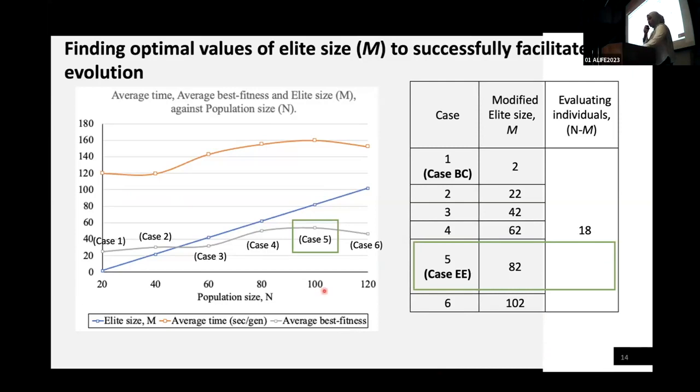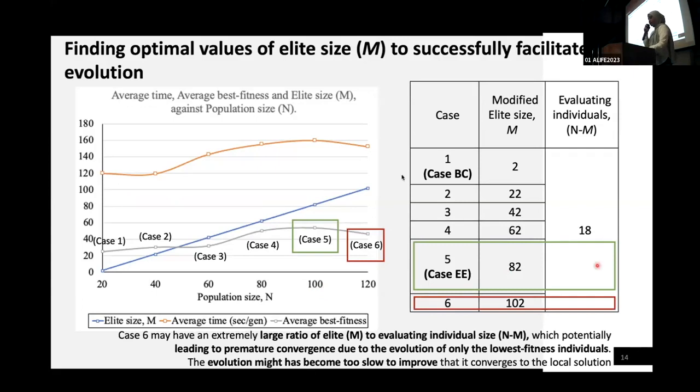However, in case 6, we expect that this case will be the best, but the average fitness likely decreased, and we suspect that case 6 may have extremely large ratio of elite size to evaluating individual size, which potentially leading to premature convergence due to the evolution of only the lowest fitness individuals.